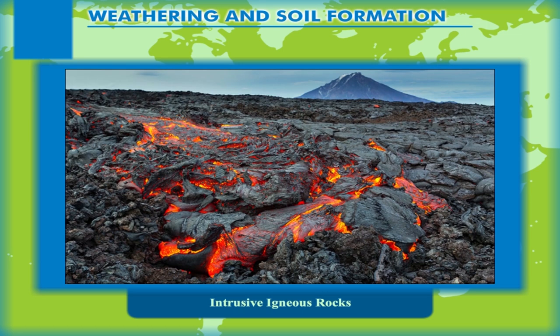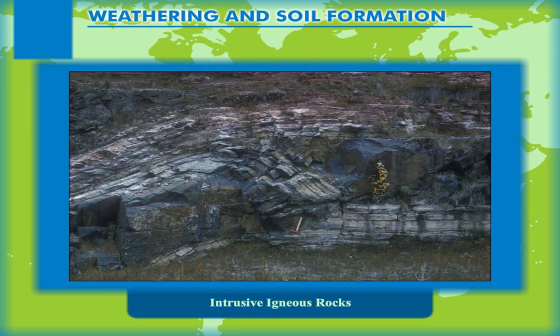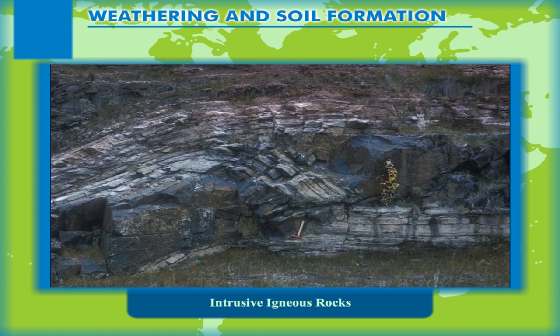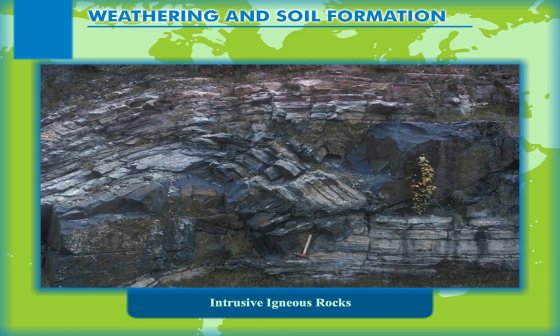Intrusive Igneous Rocks. They are formed by the solidification of magma below the surface of the earth in the cracks or joints. Inside the earth, magma cools very slowly and as a result forms crystals of large size. Sometimes the magma solidifies at a great depth. Due to very slow cooling, large-size rock crystals are formed very deep down. The deep-seated igneous rocks are called Plutonic rocks.